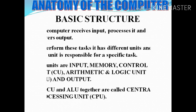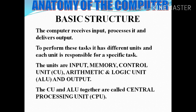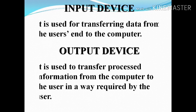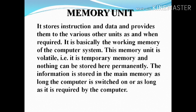The anatomy — the basic structure of computers — is our next discussion point. The computer receives input, processes it, and delivers the output. Input devices take input from the users to the computer. Output devices send processed information from the computer to the user. The memory part stores the set of instructions and data; it provides various other units as required and is basically the working memory of the computer system.